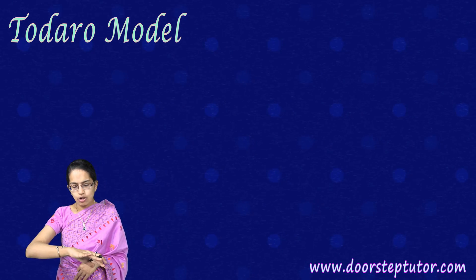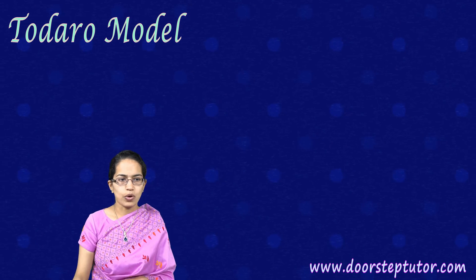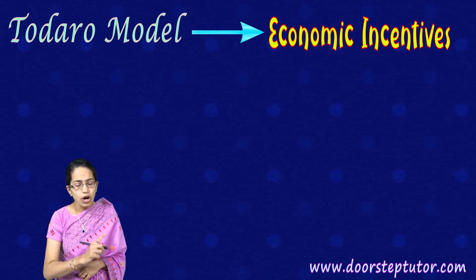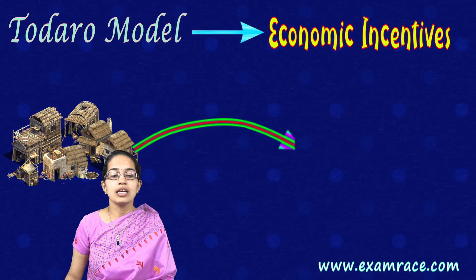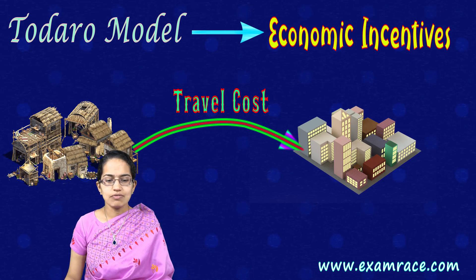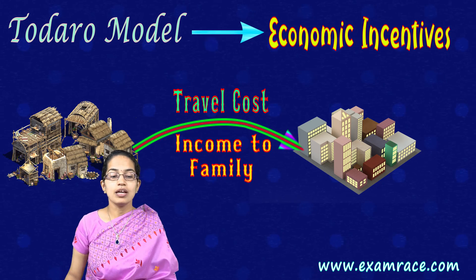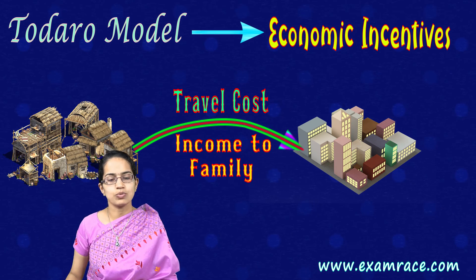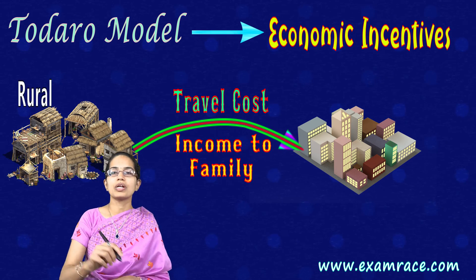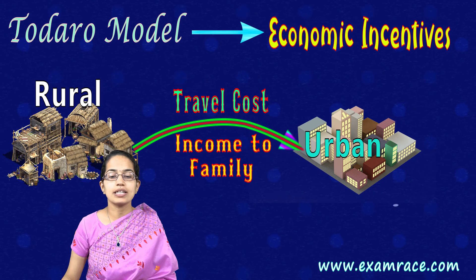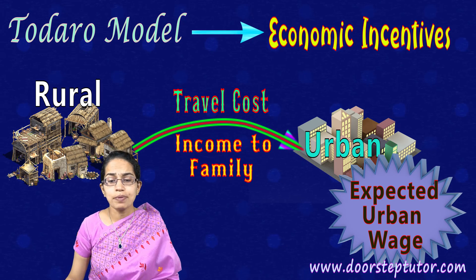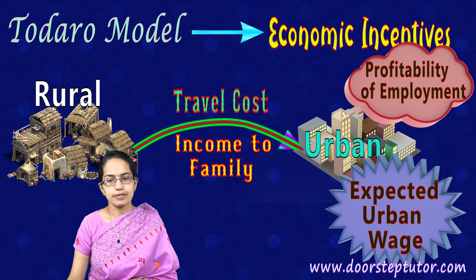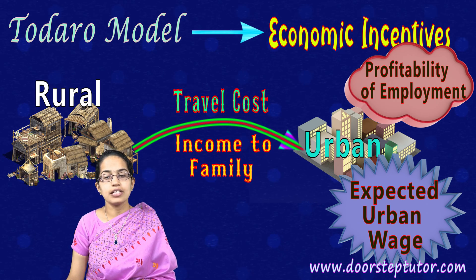Todaro's model is very important to understand rural-urban migration. He believed in a model where economic incentive is key — if there is an economic incentive, a person would think of switching. When switching, one must consider travel costs, the need to provide basic income for the family left behind, and subsistence income in the city. The critical factor is not the actual urban wage rate but the expected urban wage rate — the probability of employment is very important in determining rural-to-urban movement.